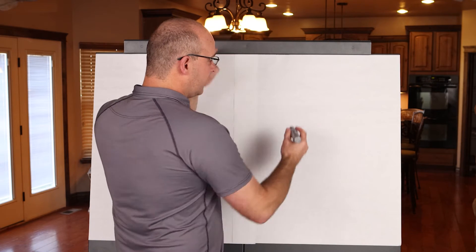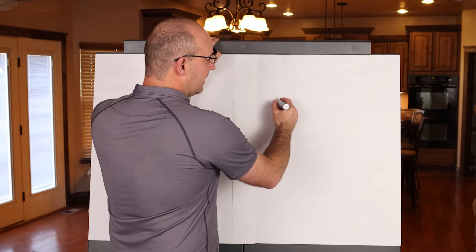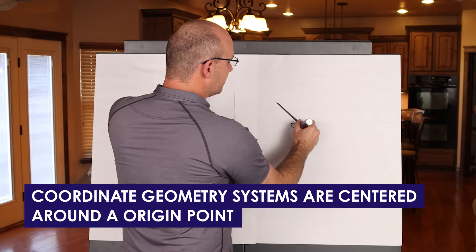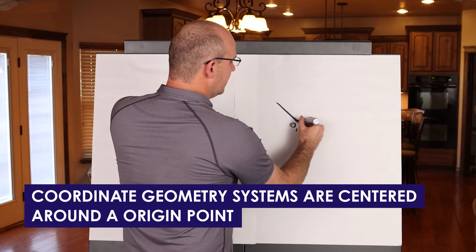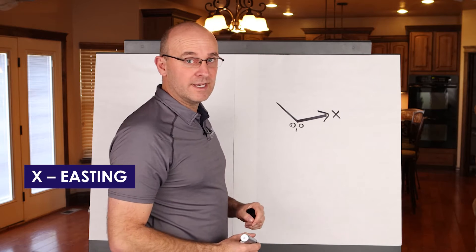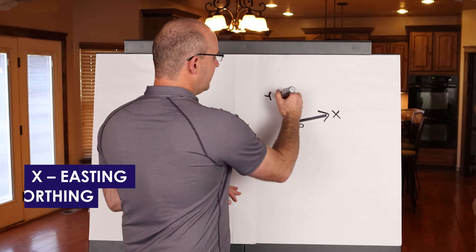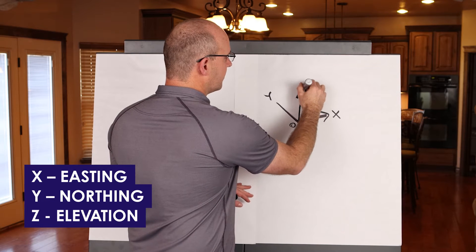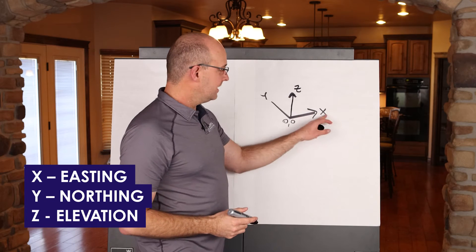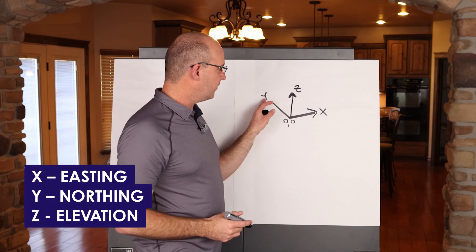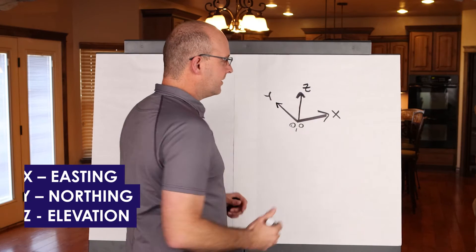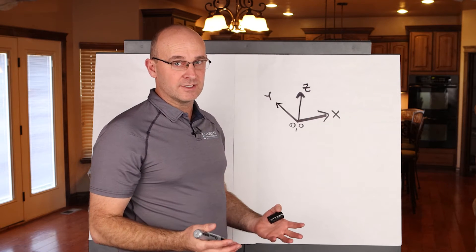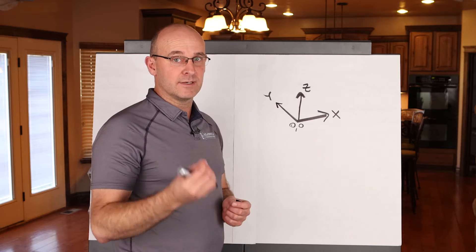Coordinate geometry systems are centered around an origin point, or zero, zero. They have an X for your easting, a Y for your northing, and elevations in construction are your Z — easting, northing, elevation, or X, Y, and Z. That provides those three dimensions for everything on our project, and they can all be represented by coordinates.